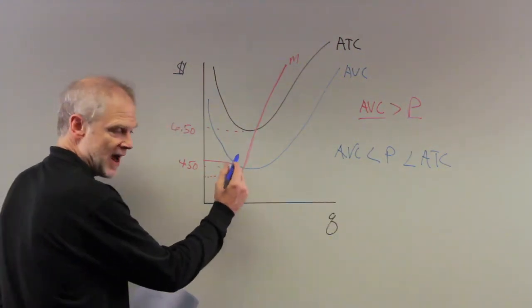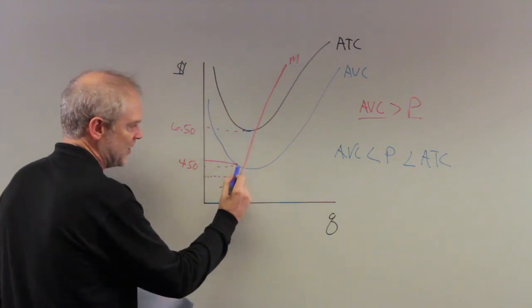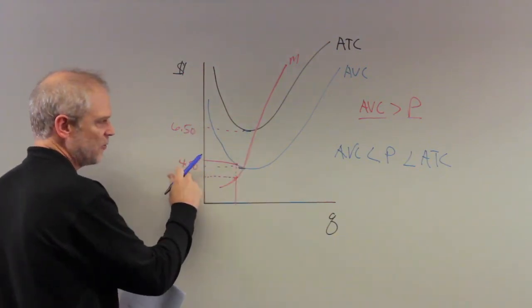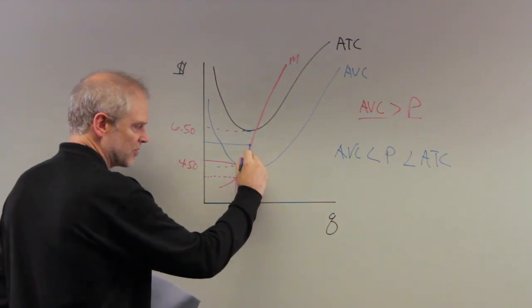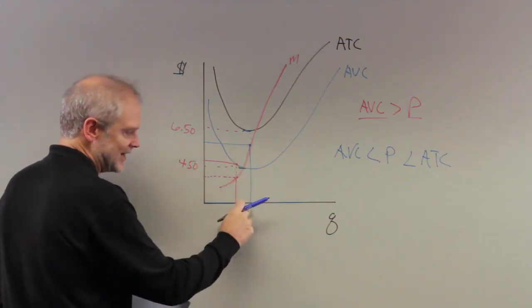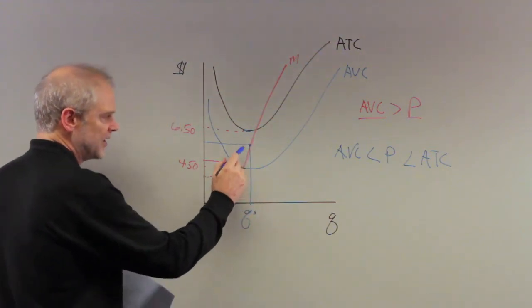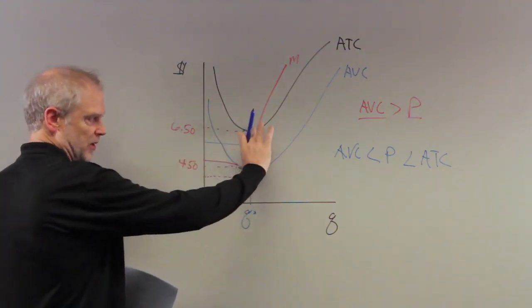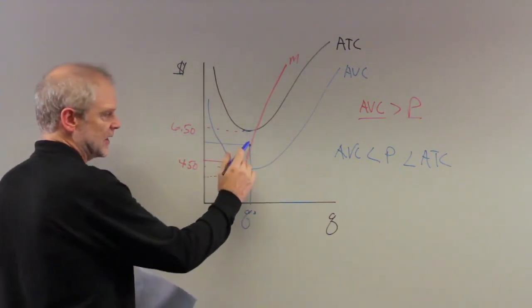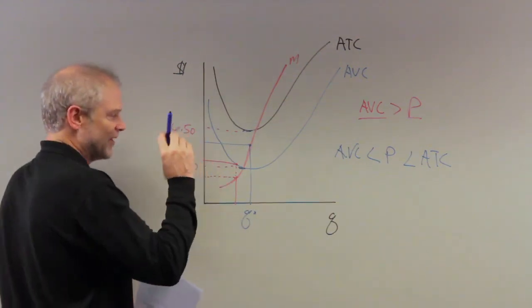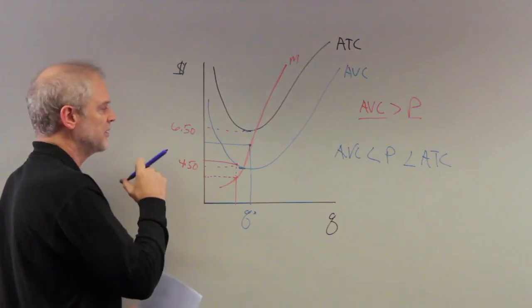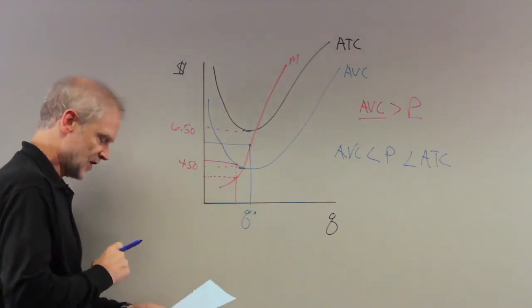So graphically, if the price falls anywhere between $6.50 and $4.50, this area here, again, price equals marginal cost. There's your output. At this level of output, we'll call it Q star, this firm, whatever this price is between $6.50 and $4.50, this firm will stay in business. It will be losing money in the short run. In the long run, this is not sustainable, but in the short run, it certainly is.